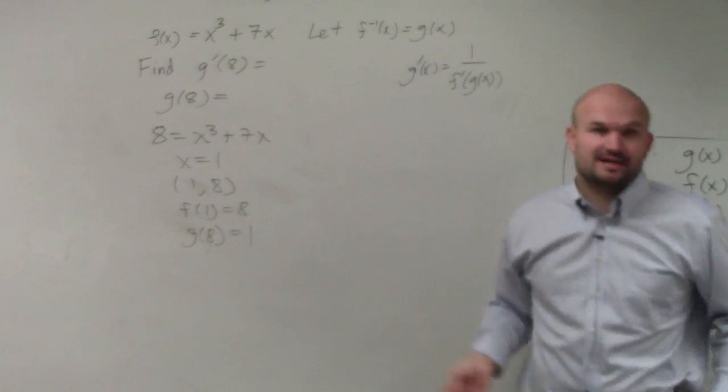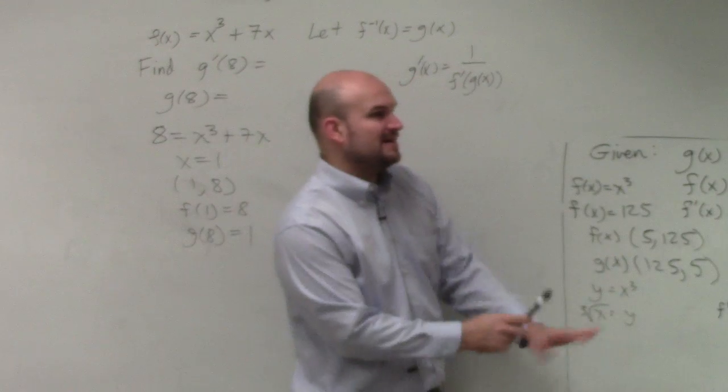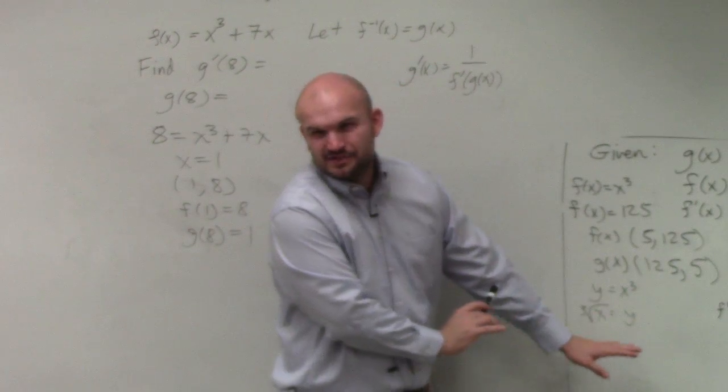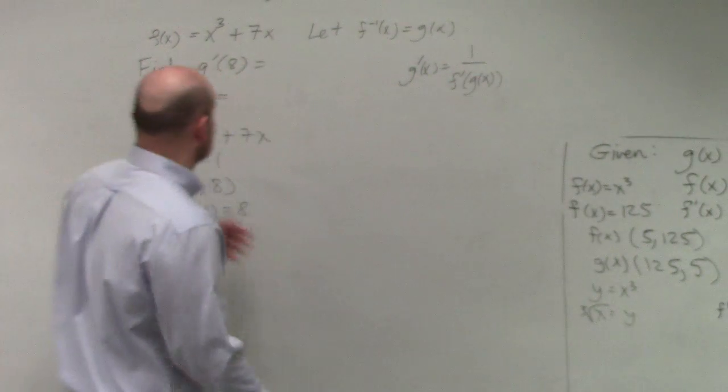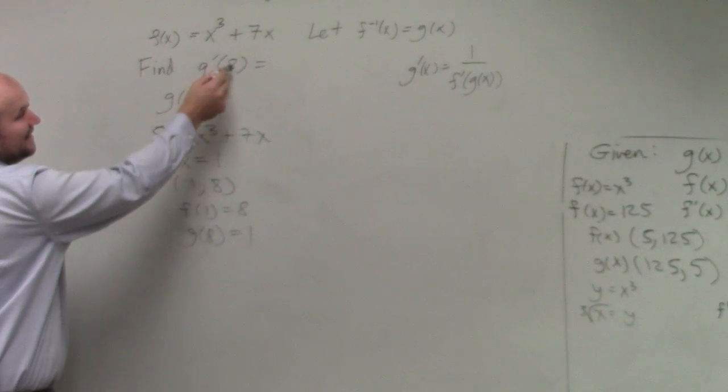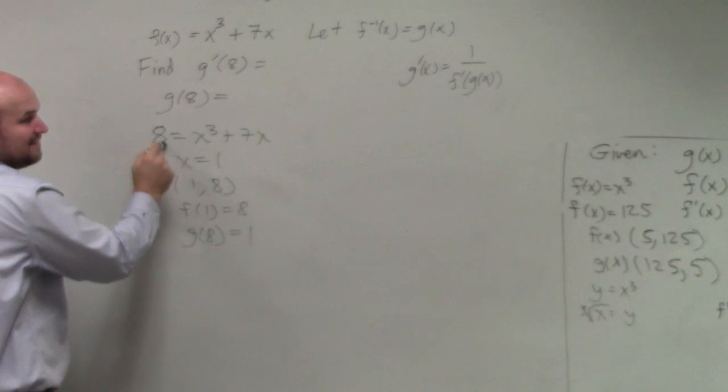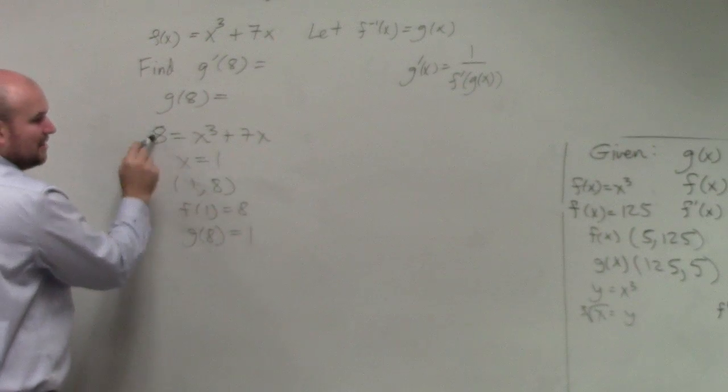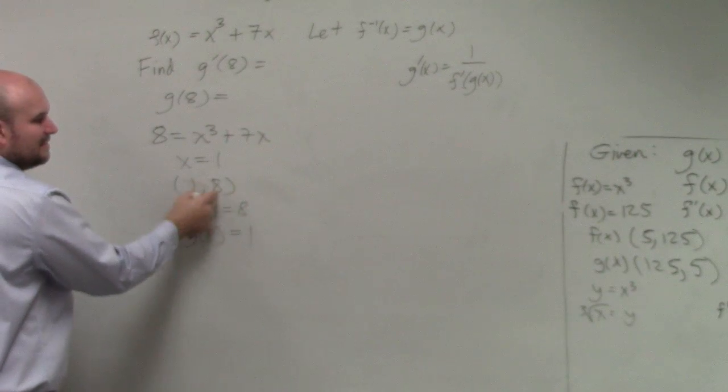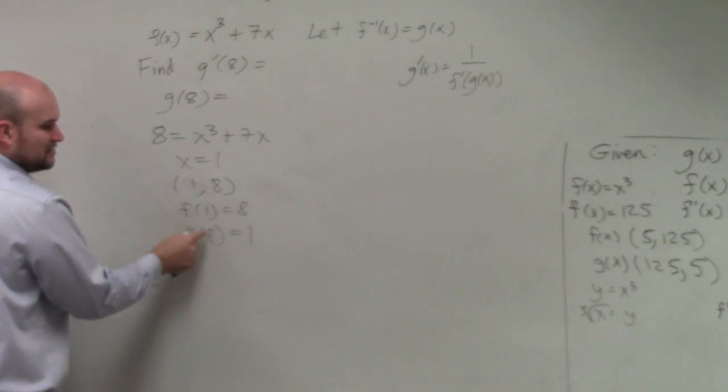So if you can't find the inverse like I did over here, where you just swap the x and y's and solve, which you don't really need to do, you just need to actually understand that if I need to find this, that means that's the input of my f(x) function. Let's find the input, or that's the output, so let's find the input. That creates a point of my function. So f(1) = 8. Therefore, g(8) = 1.